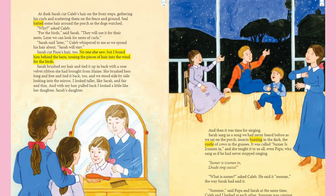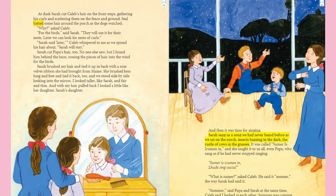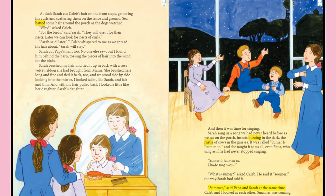"Why?" asked Caleb. "For the birds," said Sarah. "They will use it for their nests." "Later we can look for nests of curls," Sarah said. "Later," Caleb whispered to me. "Sarah will stay." Sarah cut Papa's hair too. No one else saw, but I found him behind the barn tossing pieces of hair into the wind for the birds. Sarah brushed my hair and tied it up and back with the rose velvet ribbon she had brought from Maine. We stood side by side looking into the mirror — I looked taller, like Sarah. Then it was time for singing. Sarah sang a song called "Sumer Is Icumen In," and she taught it to us all — even Papa, who sang as if he had never stopped singing.